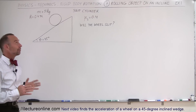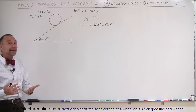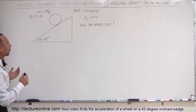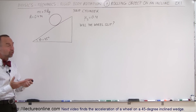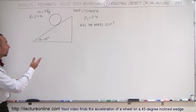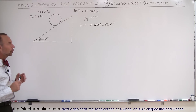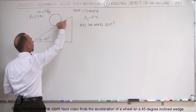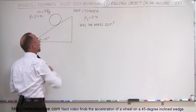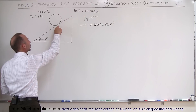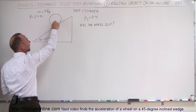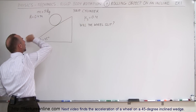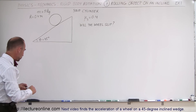Welcome to ElectronLine. Here we have a different kind of example involving a rolling object coming down an incline. The question is: will this rolling object — this wheel, a solid cylinder — slip or roll down the incline? That depends on the coefficient of friction between the wheel and the surface, how steep the incline is, and whether the torque caused by friction is sufficient to keep up with the acceleration down the incline.